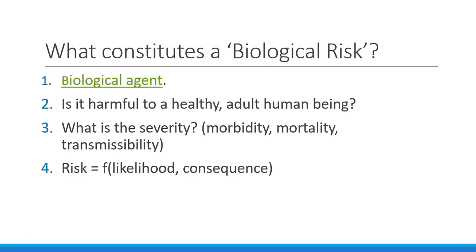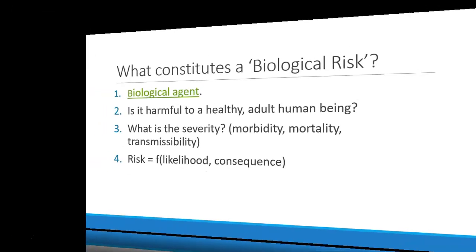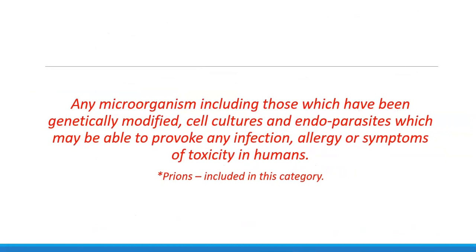We have to look at biological risks in terms of the likelihood and consequence of release or exposure to a biological agent. We need to ask several questions such as: is the biological agent harmful to a healthy adult human being? What is the severity in the case of an infection? We look at it in terms of morbidity, mortality and transmissibility. Risk for biological risk managers is measured in terms of likelihood and consequence. Any microorganism, including those which have been genetically modified, cell cultures and endoparasites which may provoke any infection, allergy or symptoms of toxicity in humans are considered biological agents. Prions are included in this category.